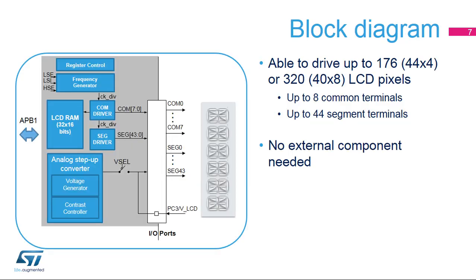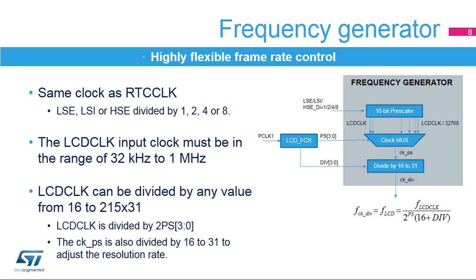Here is the block diagram of the LCD controller, which also shows the interface with the LCD display. This controller is able to drive 176 (44x4) or 320 (40x8) LCD pixels. It is made up of the frequency generator used to deliver the correct clock frequency to drive the LCD display, the COM and SEG drivers, the LCD RAM which contains pixel information, active and inactive, and the analog step-up converter used to adjust the contrast. No external components are required to make the controller work except an external capacitor connected to VLCD when the step-up converter is used, VSEL closed.